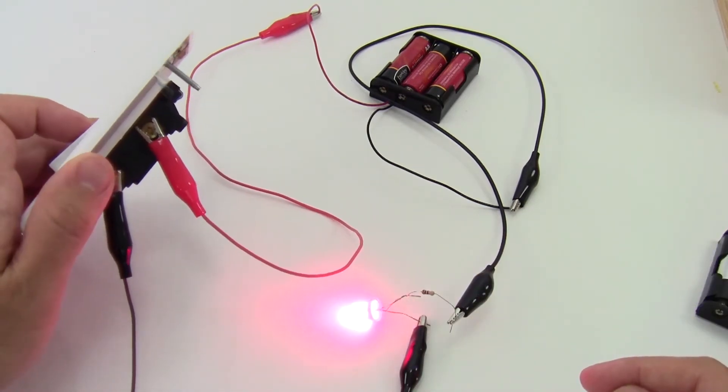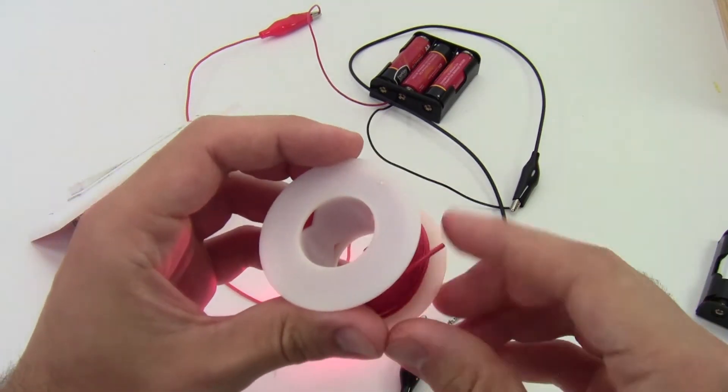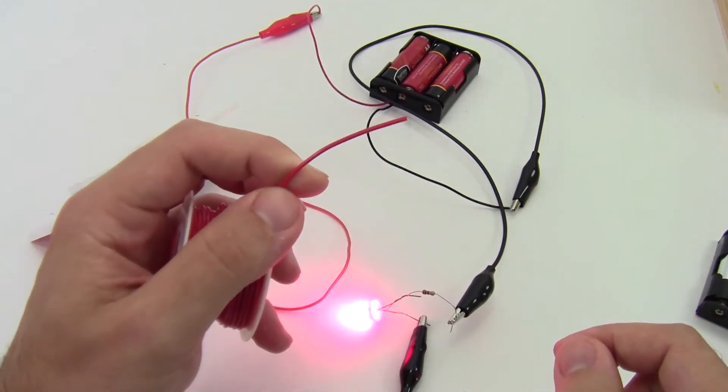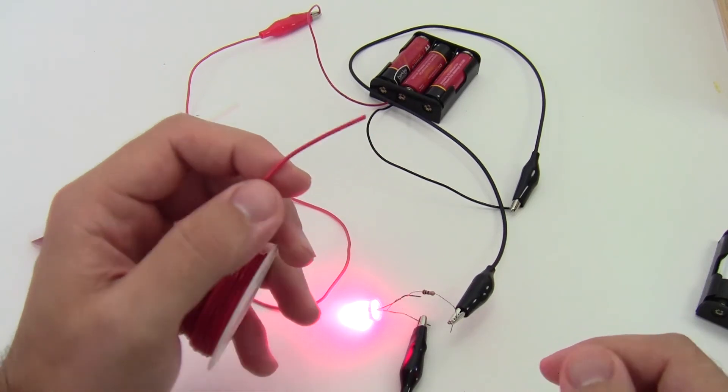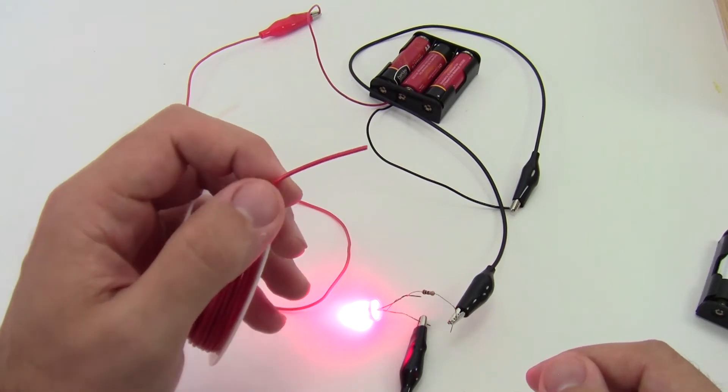So what you're going to want to do to build this circuit inside the box is get yourself some hookup wire, which you can buy in spools. And the connections are going to be much sturdier if you solder everything. So I don't have my own soldering tutorial, but you can get a cheap soldering iron, and there are tons of introduction to soldering tutorials on YouTube.